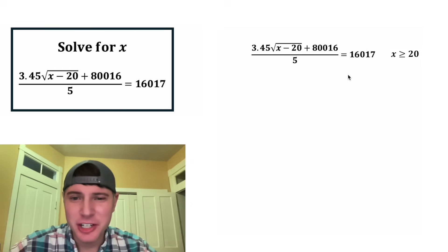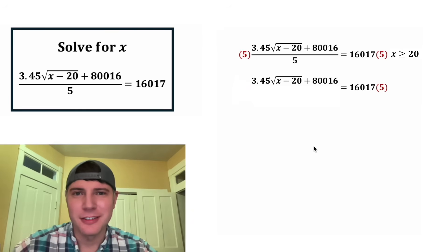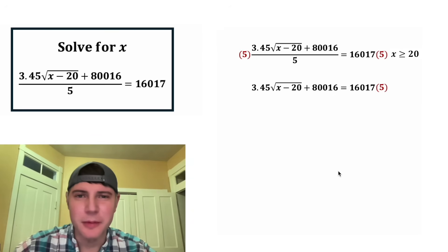First step, I don't really like fractions, so let's get rid of this five in the denominator. We can do that by multiplying both sides of the equation by five. On the left-hand side, this five and this five will cancel each other out. And on the right-hand side, 16,017 times five is 80,085.